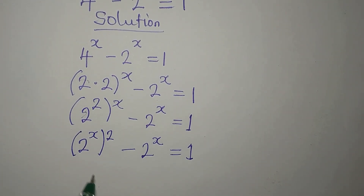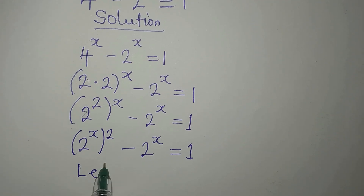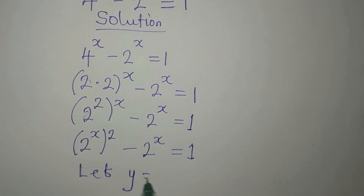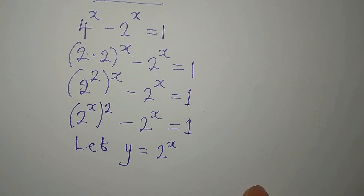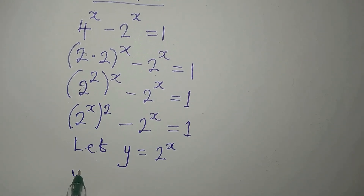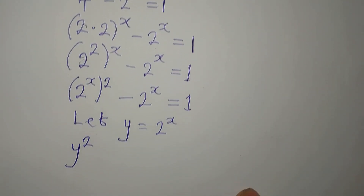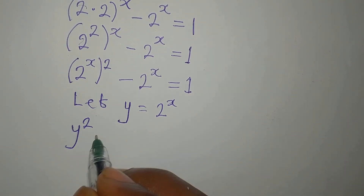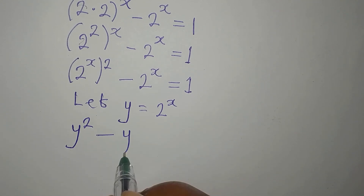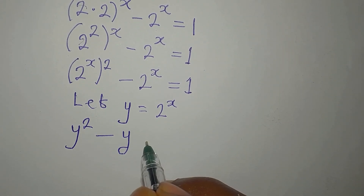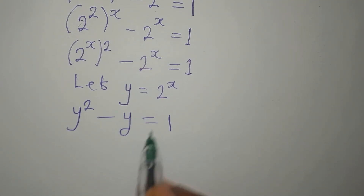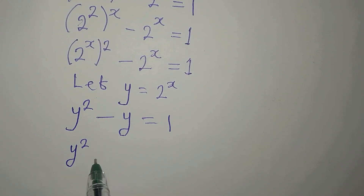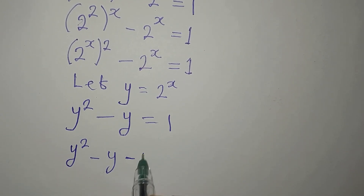Now that we have 2 to the power of X in two places, let Y be equal to 2 to the power of X. By doing this, we'll now have a quadratic equation. So in place of this we have Y to the power of 2, minus 2 to the power of X is Y, then this equals 1. Bringing this to the other side, we have Y squared minus Y minus 1 equals 0, and this is a quadratic equation.